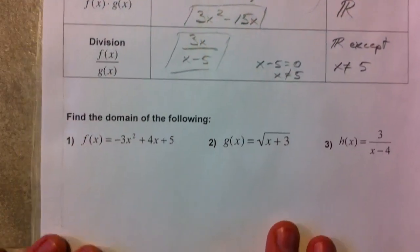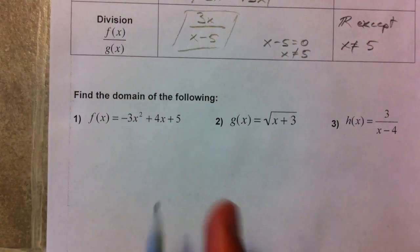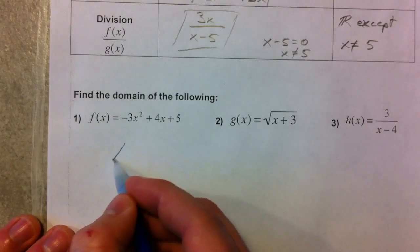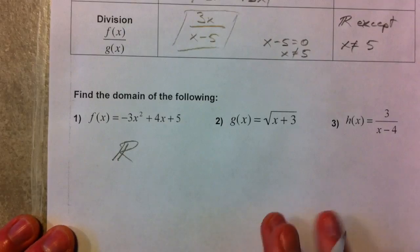All right, so continuing a little bit with the domain that we talked about before. x squared plus 4x plus 5, this is going to be all real numbers. Not a problem.